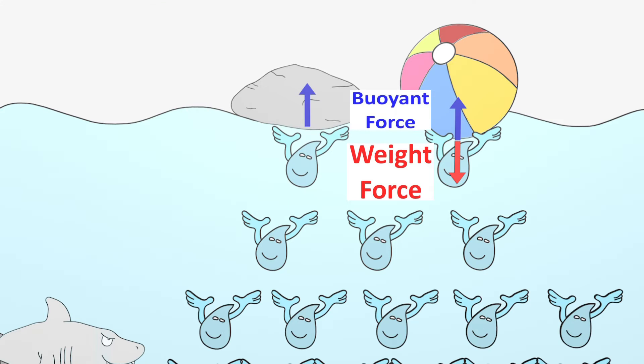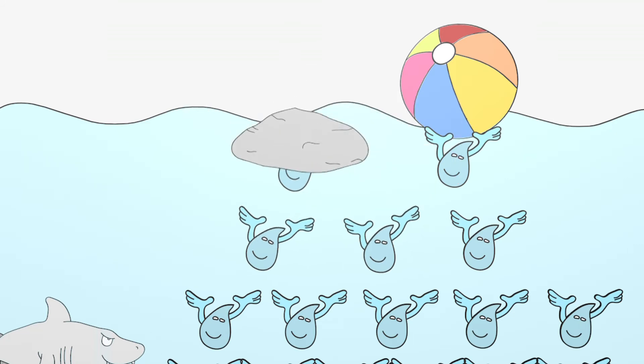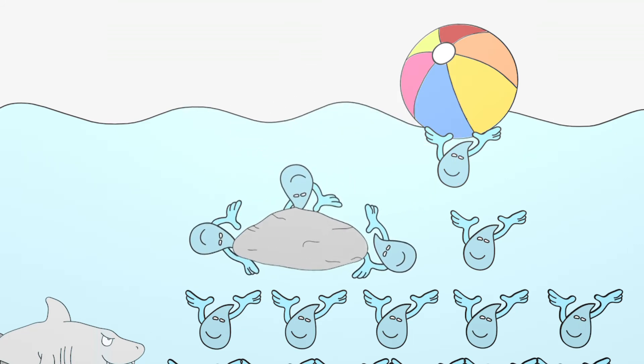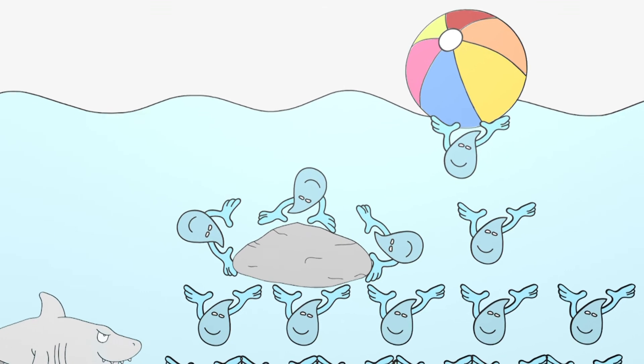However, with a similar volume, the stone has a significantly greater mass than the beach ball. Therefore it presses with a significantly greater weight force on the water surface. Since the two forces do not balance each other this time, the stone sinks to the bottom. On the way down, the water now presses on the stone from all sides.